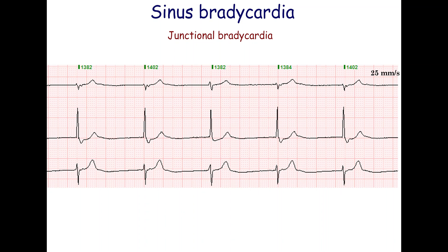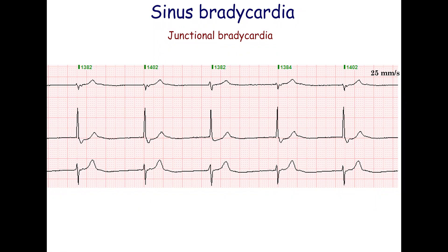Additionally, the P-wave may appear at the end of the QRS complex or within the ST segment. In this case, the rhythm originates from the lower part of the junctional region. The ventricles are activated slightly earlier than the atria.